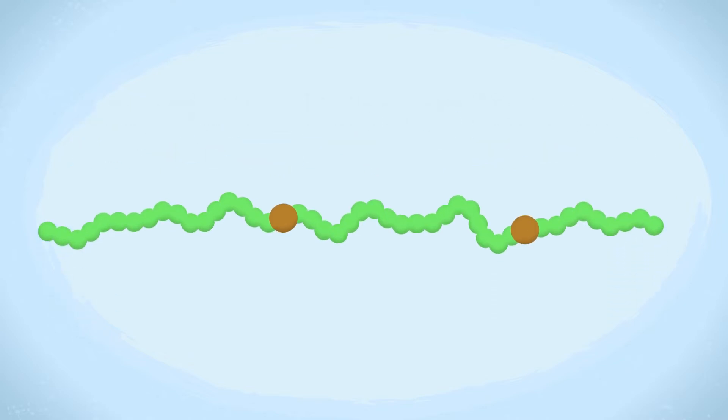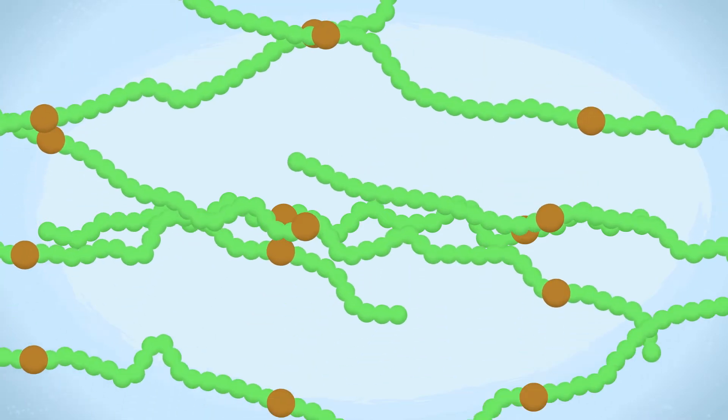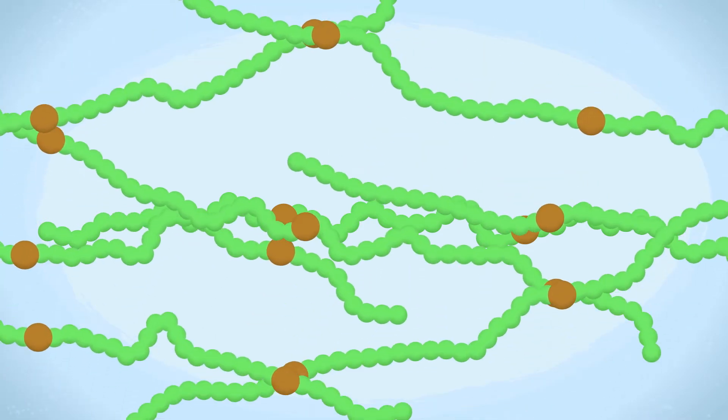These polymers are made of long molecular chains that contain sticky groups along their lengths. The sticky groups clump together into clusters of different sizes. These clusters connect the chains into a network.